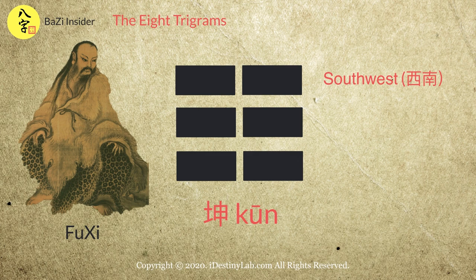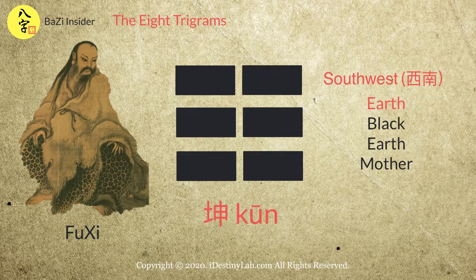Last but not least, the final Gua represents the south-west direction. It also represents the earth, black colour, and mother. Its 5 elements is earth.